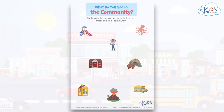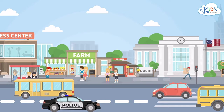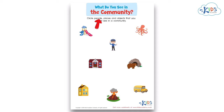What do you see in the community? A community is a place where people live together. There are many places to visit and many people to see. Let's read the directions: circle people, places, and objects that you might see in a community.